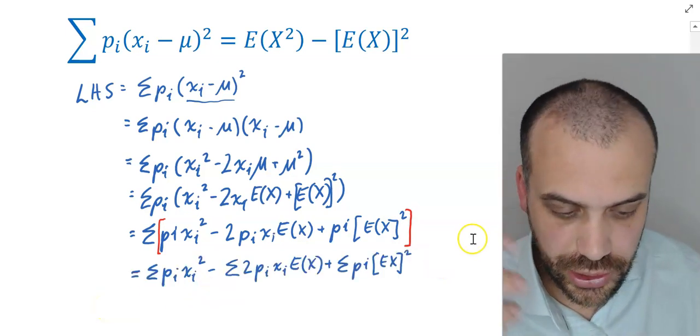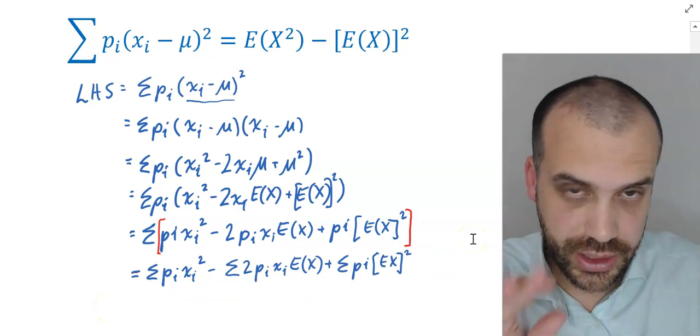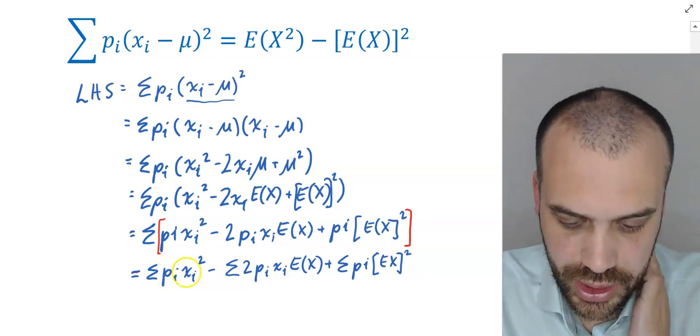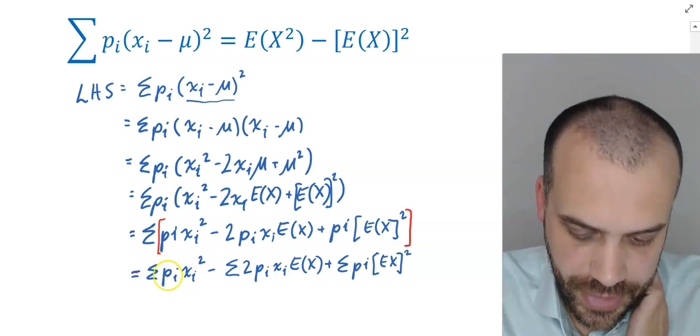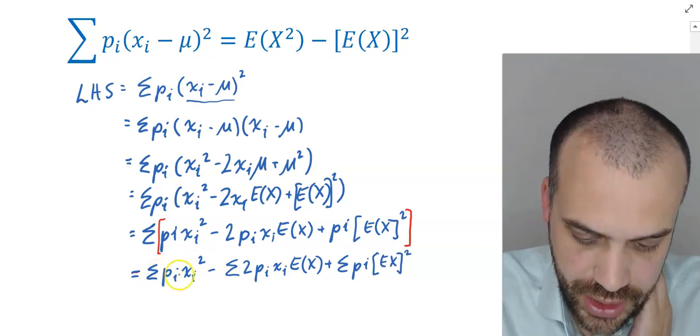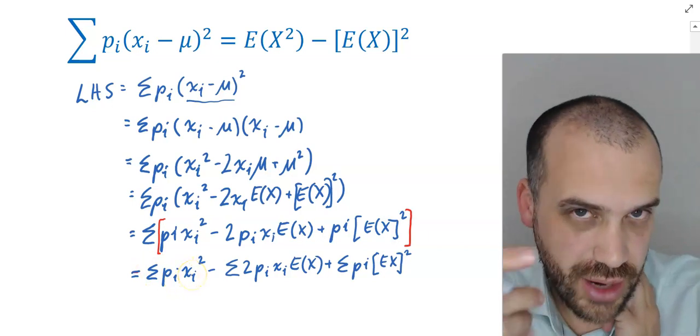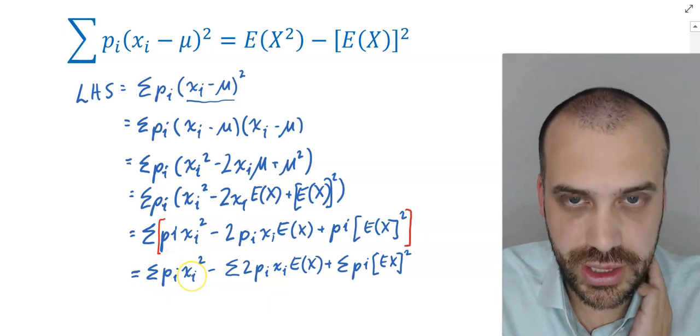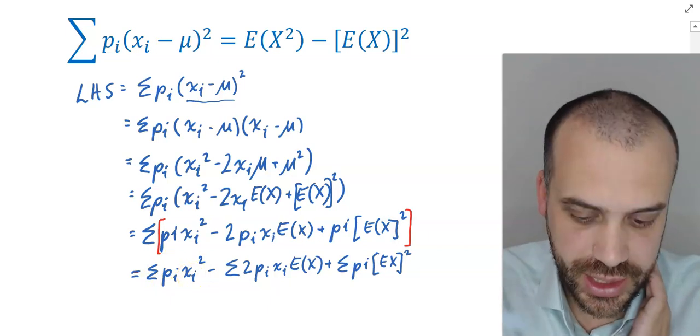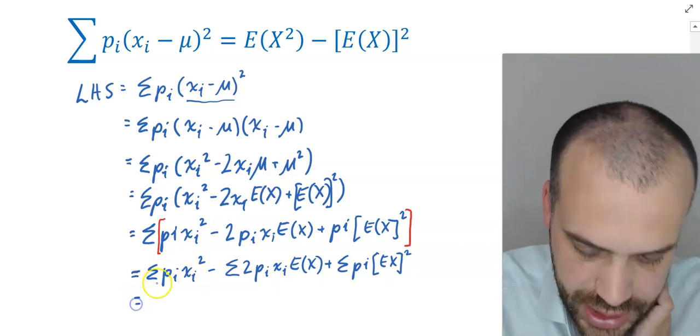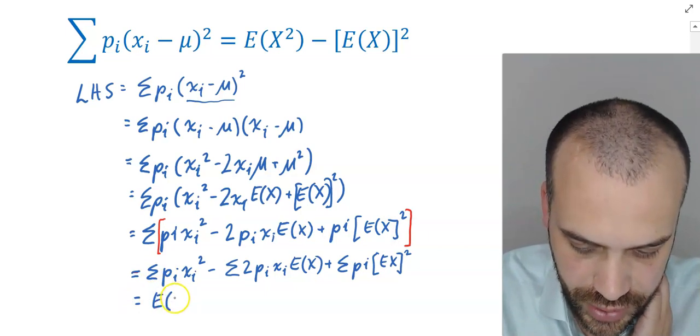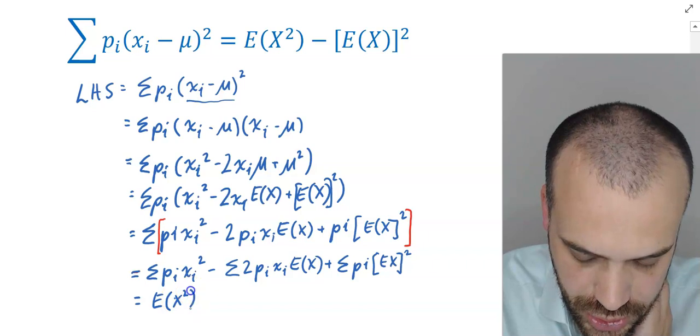There is a lot going on in this line here, so you're going to have to be a bit careful here. We have the sum of pi xi squared. Now the sum of pi xi, that's our expected value formula. So this here is finding the expected value of x squared. So we can replace this bit here with the expected value of x squared.